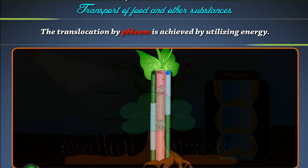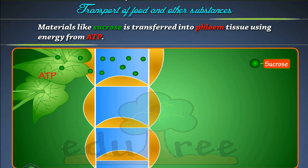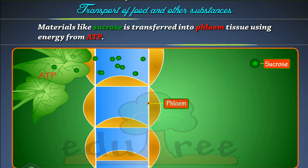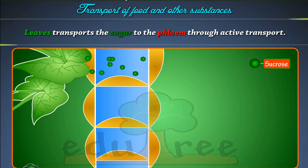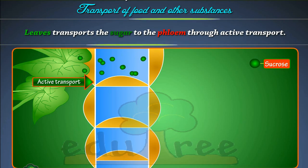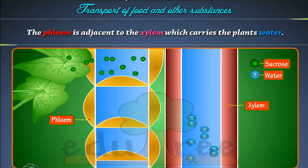The translocation by phloem is achieved by utilizing energy. Materials like sucrose are transferred into phloem tissue using energy from ATP. Leaves transport the sugar to the phloem through active transport. The phloem is adjacent to the xylem, which carries